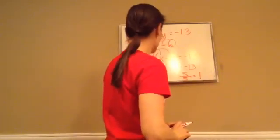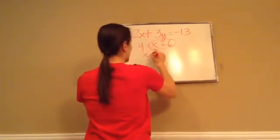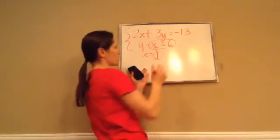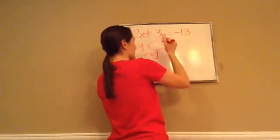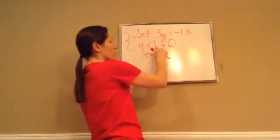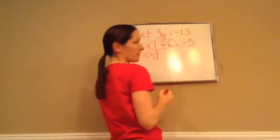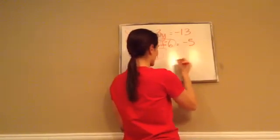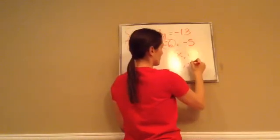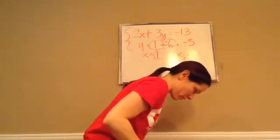Did you get that for your answer? Very good. Now, since x equals 1, we're going to take the 1 and put it back up here so we can figure out what y is. Our x equals 1. So then 1 plus a negative 6 — y equals 1 plus a negative 6 — negative 5. Y equals negative 5. So if you were to write that, remember x comes first and then y. X was 1 and y was negative 5. So 1, negative 5 would be your ordered pair.